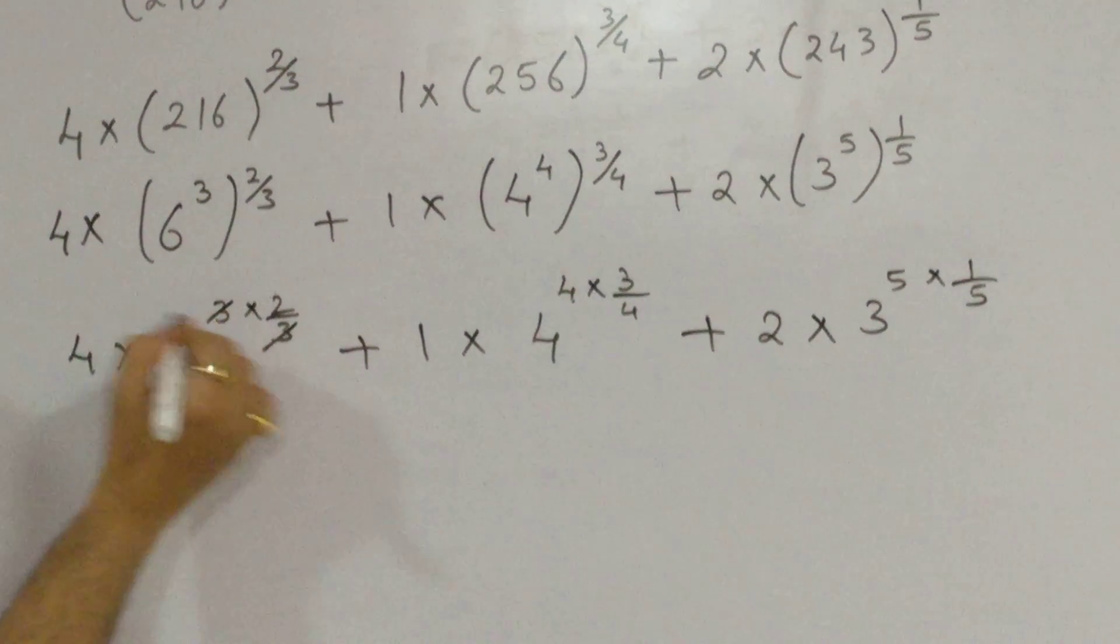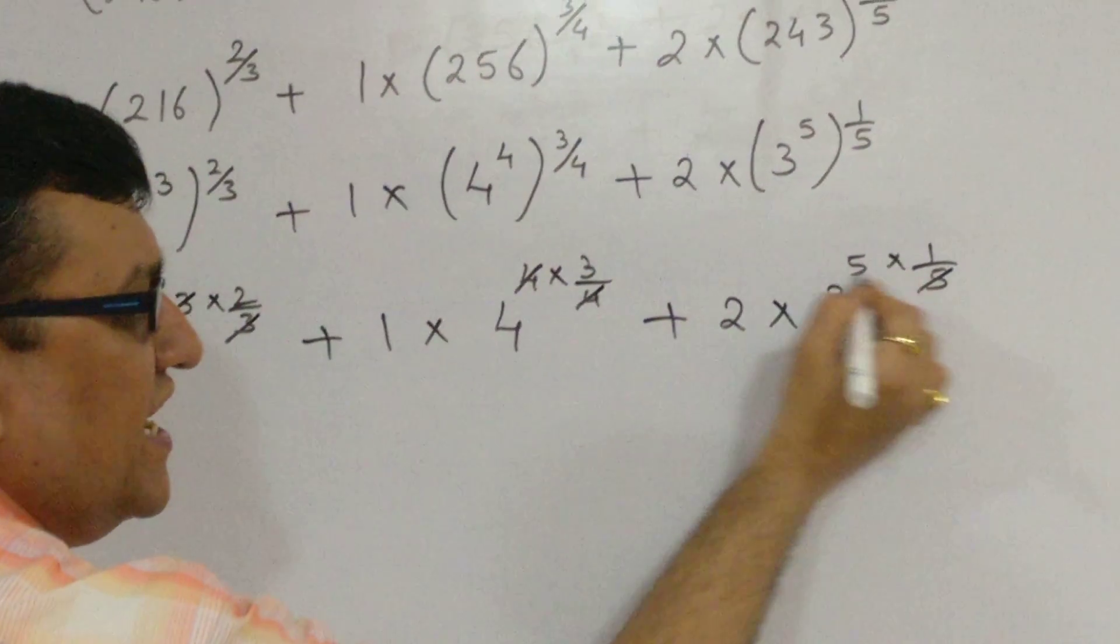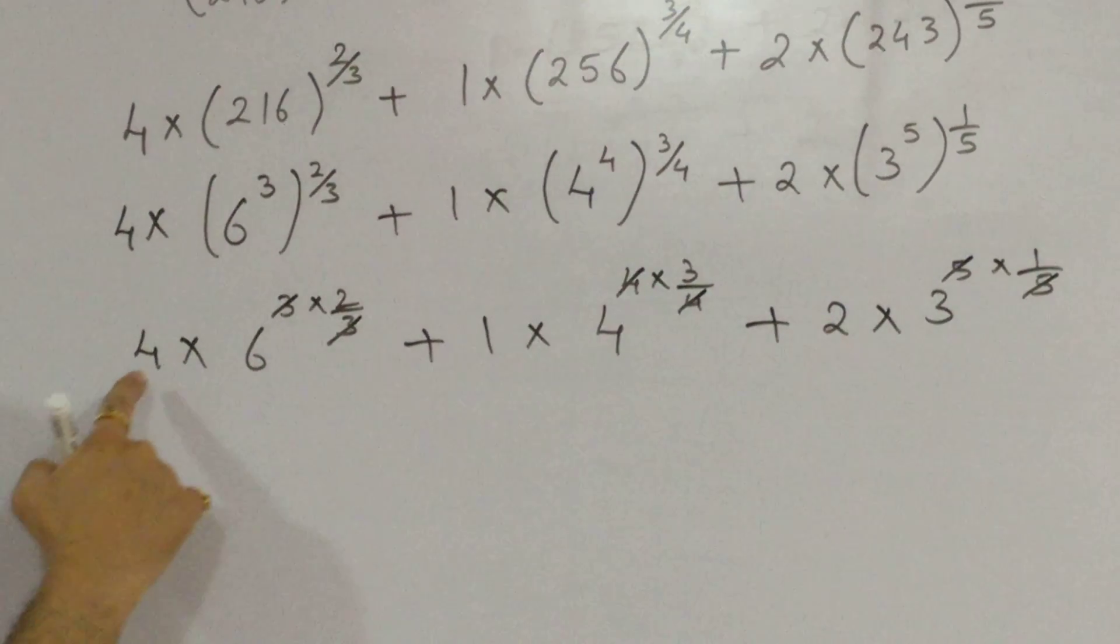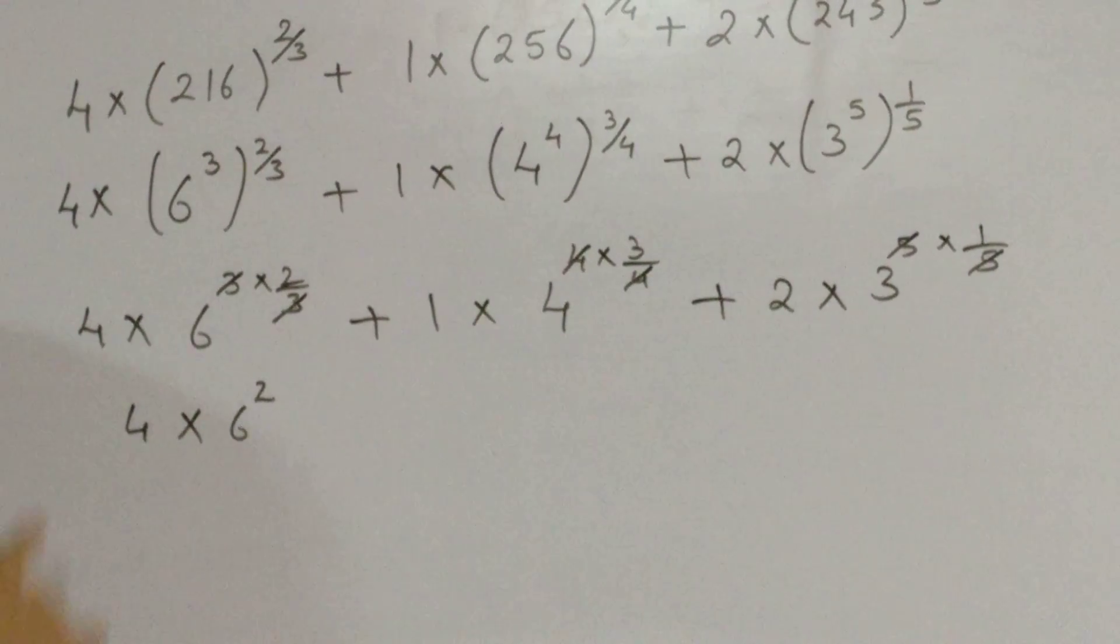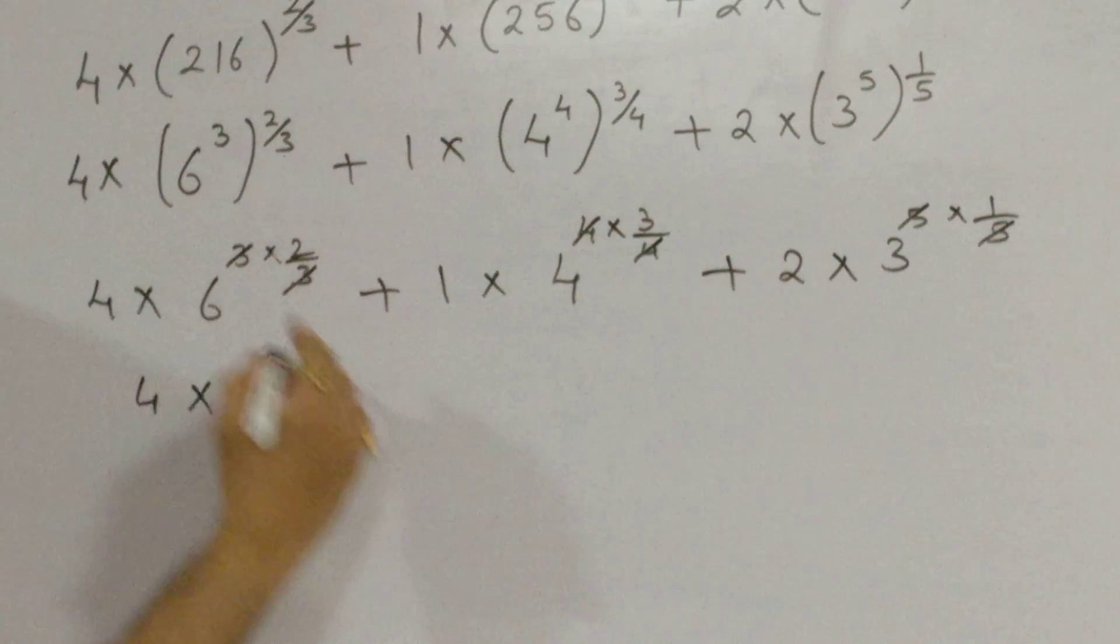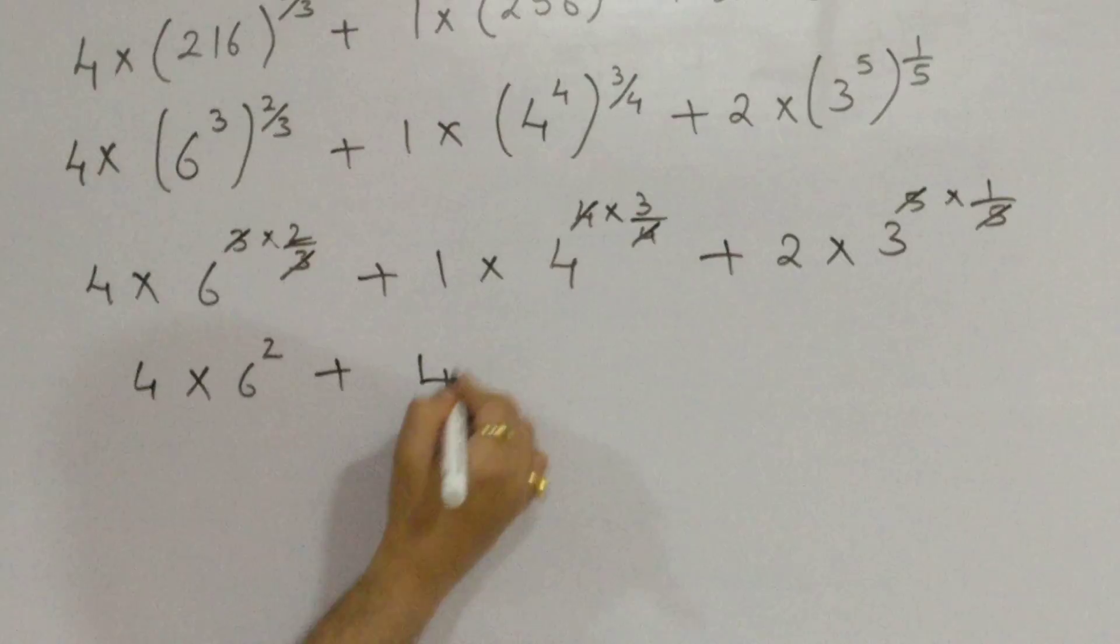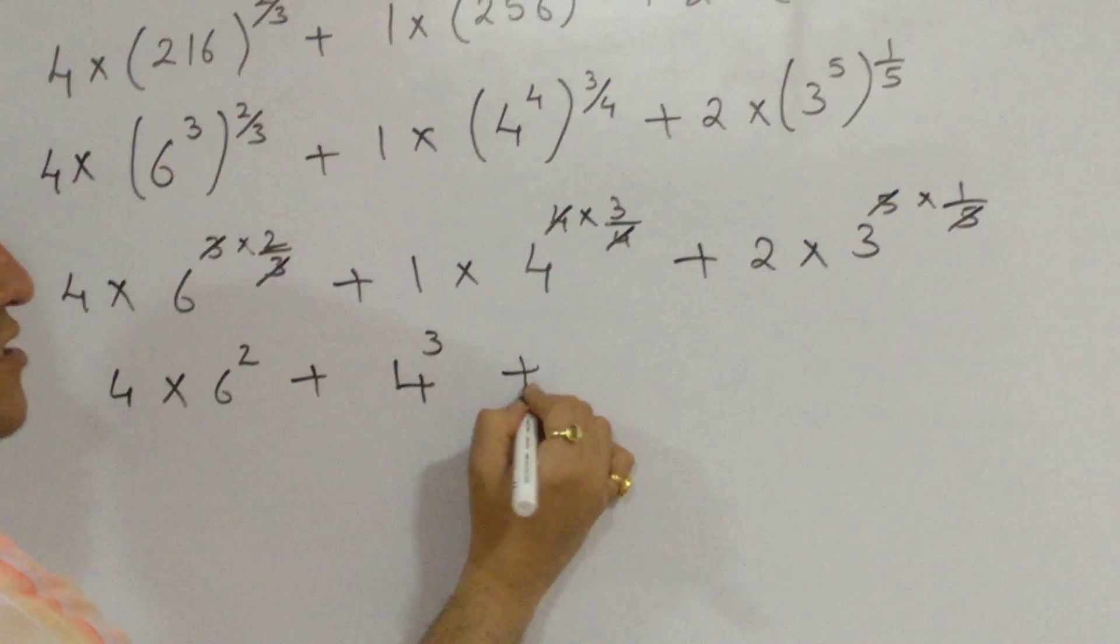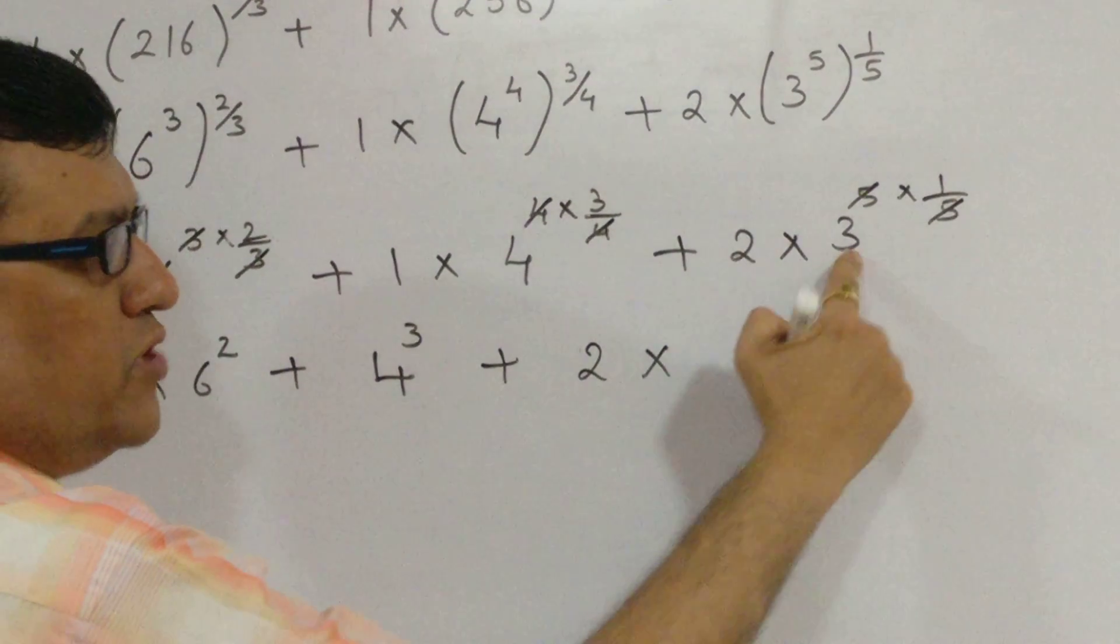3, 3 gets cancelled off. 4, 4 gets cancelled off. 5, 5 gets cancelled off. So, what I am left with? I am left with 4 into 6 square, 4 into 6 square, plus 1 into 4 cube, which is 4 cube, 4 cube, plus 2, 2 into 3 raised to 1. 2 into 3 raised to 1.